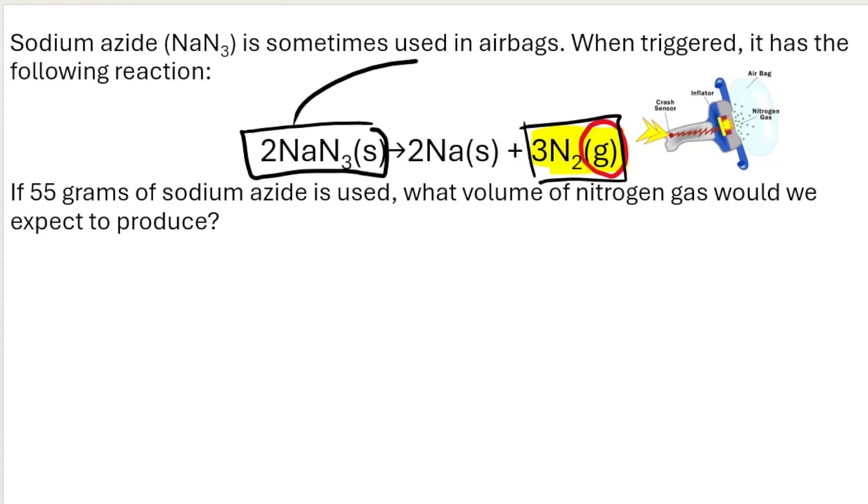We want to go from here to here because they give me the mass of this one. But I ultimately want the volume of this one. To go from one substance to another in a chemical equation, we need to use a mole ratio. But before we use a mole ratio, I need number of moles. So we need to take the information that they gave me about the reactants, which is that the mass is 55 grams, and I need to convert that to number of moles.